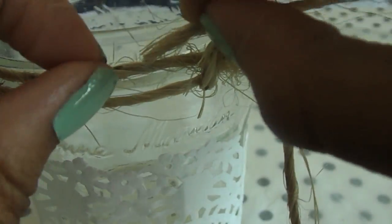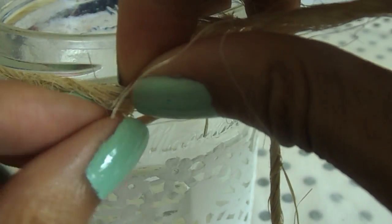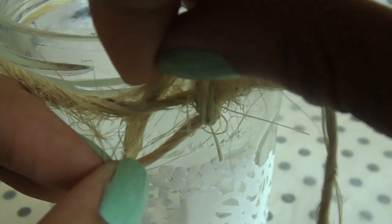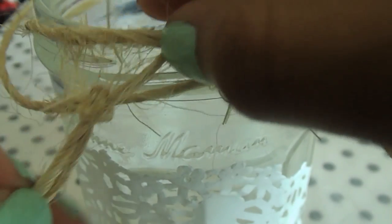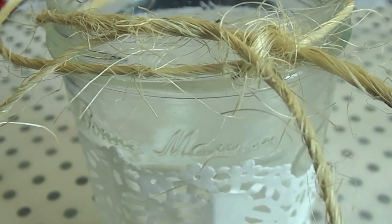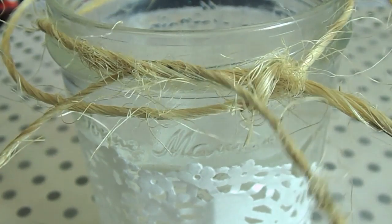And now we're just going to wrap it around a third time but this time we're just going to thread it through the top loop so it creates kind of a rope effect. And this part can be kind of tricky to do because the twine kind of splits apart when you thread it through.